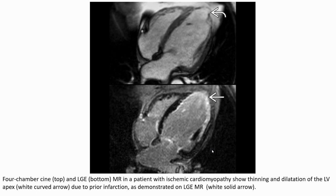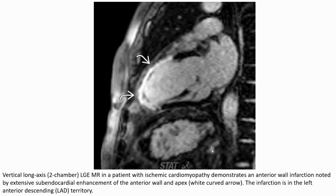Late gadolinium enhancement in a patient with ischemic cardiomyopathy: thinning and dilatation of the left ventricular apex (white curved arrow) with reduced ejection fraction, as demonstrated on the late gadolinium enhancement image (white solid arrow). Another patient with ischemic cardiomyopathy demonstrates anterior wall infarction noted by extensive sub-endocardial enhancement of the anterior wall and apex (white curved arrow), in the left anterior descending territory.